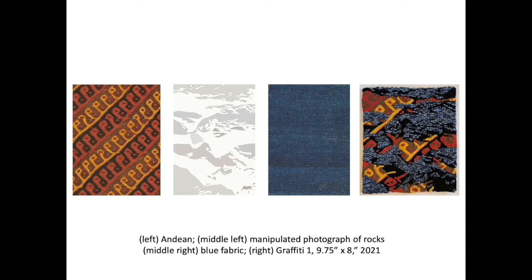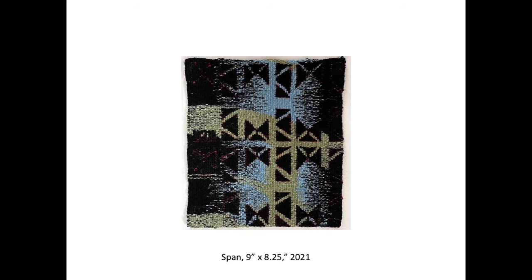Graffiti One combines a detail from an Andean textile duplicated three times, a photograph of rocks with a Photoshop filter applied, and a blue textile. It is woven with two different densities — the coarser areas are blue and employ cotton and metallic yarns that contrast materially with the finer sections using wool. Span combines a detail from an Aymara poncho with a pattern I created by taking motifs from different textiles and constructing my own pattern. Building my own patterns from small details of textiles is a direction I have been exploring more recently.